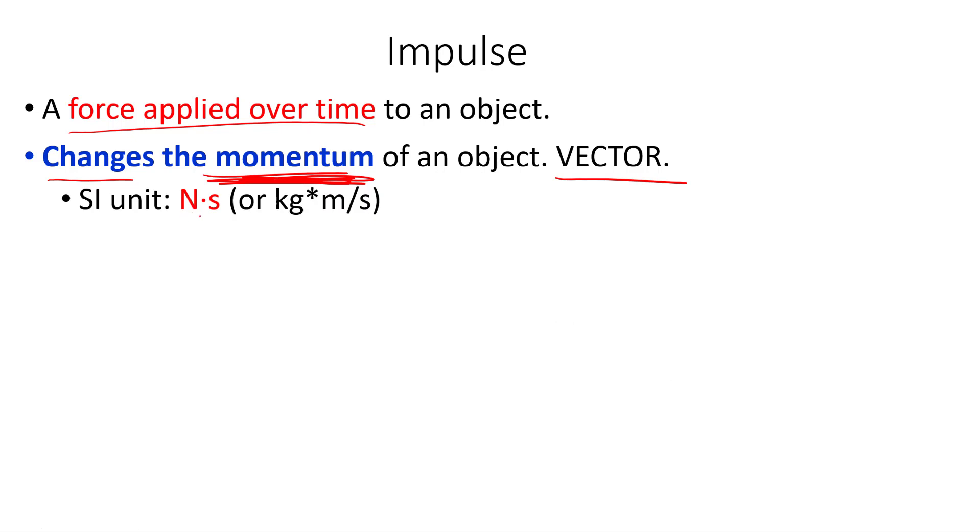The units of impulse are going to be newton-seconds, the units for force times the units of time. Equivalently, we could write that as kilogram meters per second. We don't often use a symbol for impulse, but when we do, we might use J for impulse, because usually we use I for other things.